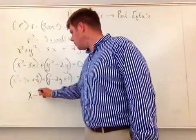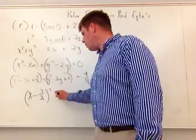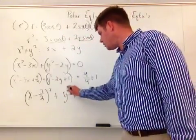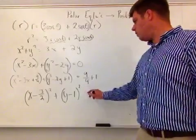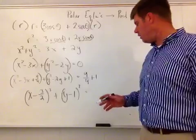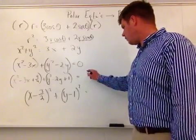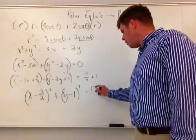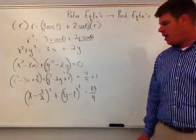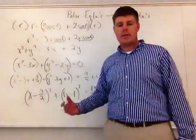So when I factor them, I get that this is going to be x minus 3 halves, that quantity squared, plus y minus 1, the quantity squared, is equivalent to, well, 9 fourths plus 1 is just going to give me 13 over 4. So 9 fourths plus 1 gives me 13 over 4.